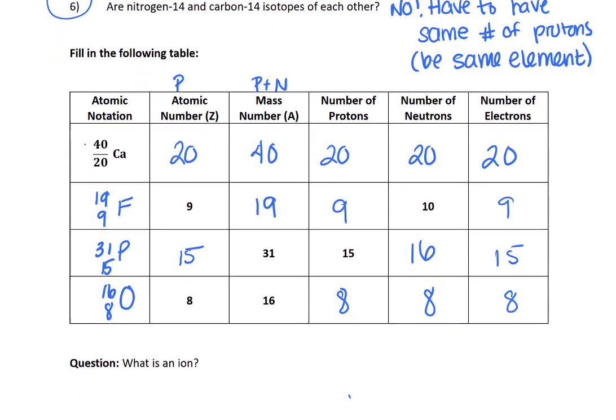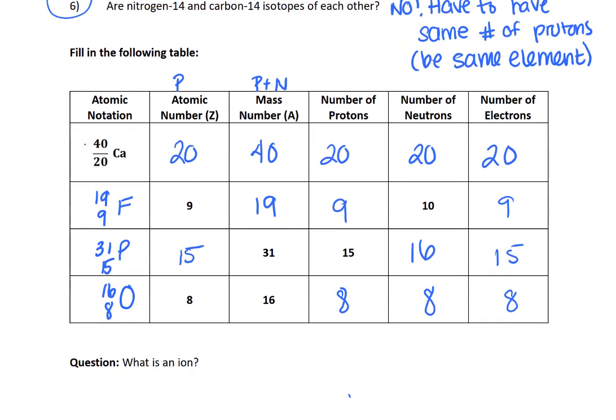So then why don't you pause again and make sure that you have the same answers as me here for this table. One thing that I do want to note is this line that's drawn here is not actually a thing. I just couldn't figure out how to make Word work without that line, so I left it in there. So we typically do not draw that line as a notation. So why don't you pause me for another moment, compare some answers, and then you can come back and we can talk about what an ion is.